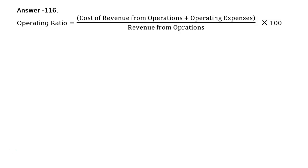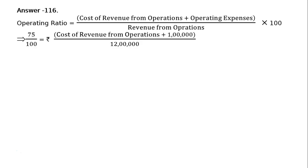The operating ratio formula is: Operating Ratio = (Cost of Revenue from Operations + Operating Expenses) / Revenue from Operations × 100. Substituting, 75% — that is, 75/100 — is equal to the following expression.